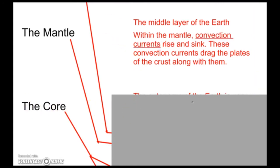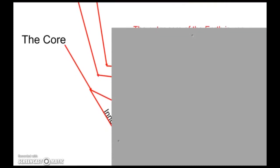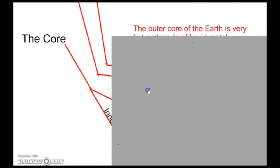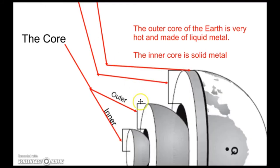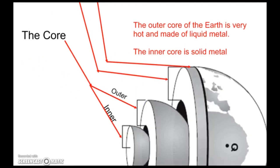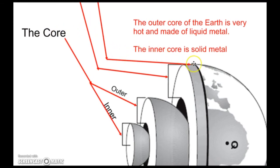Finally, the core of the Earth, that's the center part. The outer core of the Earth is very hot and made of liquid metal. The inner core is solid metal. It's so much pressure that it turns back into a solid again. Here's the graph at the bottom. We have the lithosphere or crust right here. We have the mantle of the Earth, and then we have the outer and the inner core.